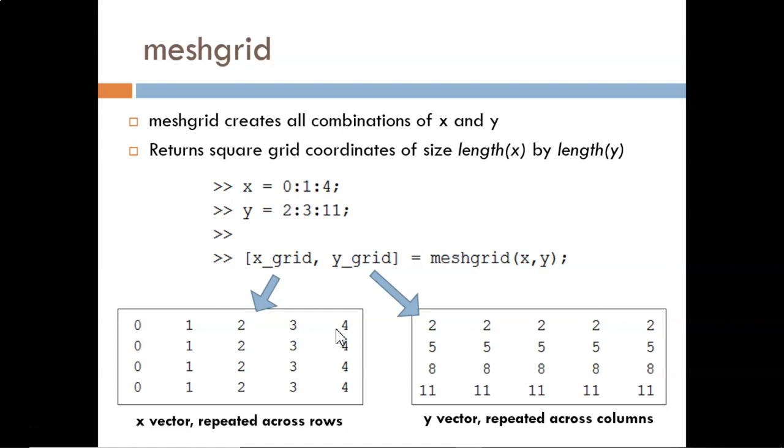The two resulting matrices are shown here. The first one looks just like the original X vector, except now it is repeated four times across rows. The second one looks just like the original Y vector, except now it is repeated five times across columns.